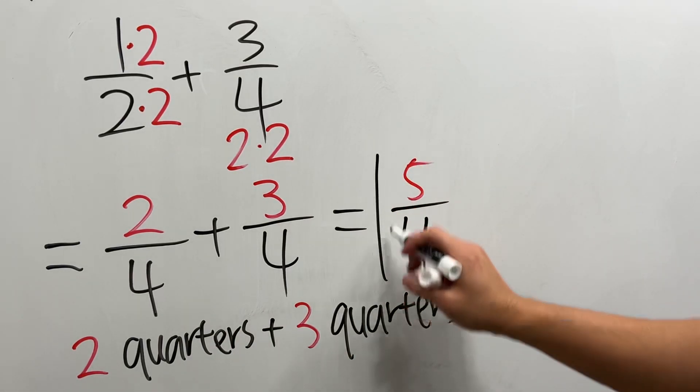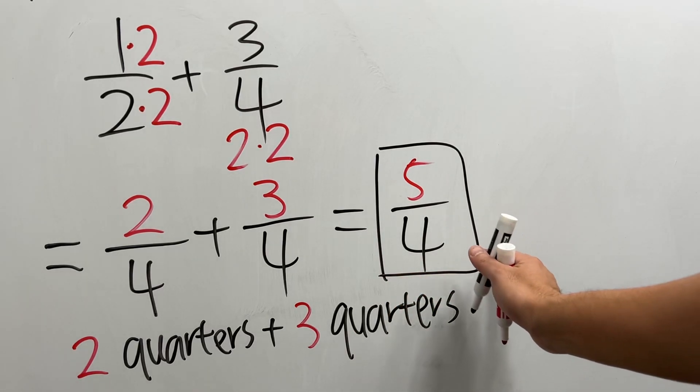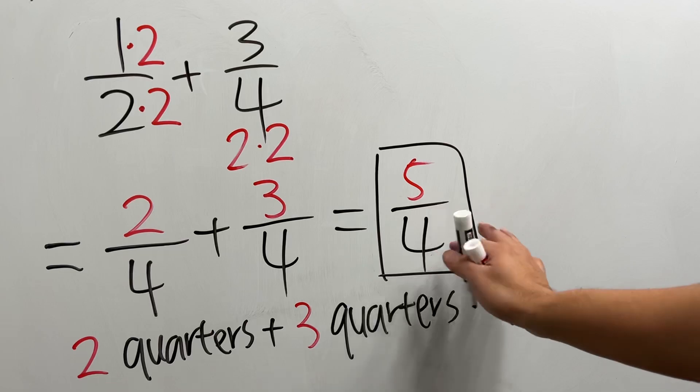5 over 4. And that's it. Do we simplify it to a mixed number? Maybe for another video.